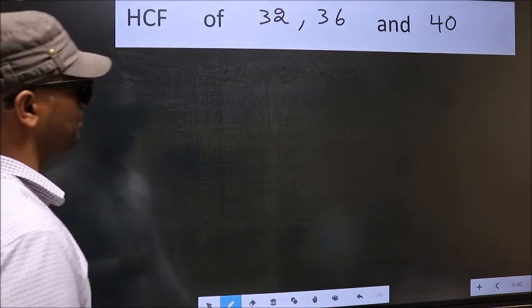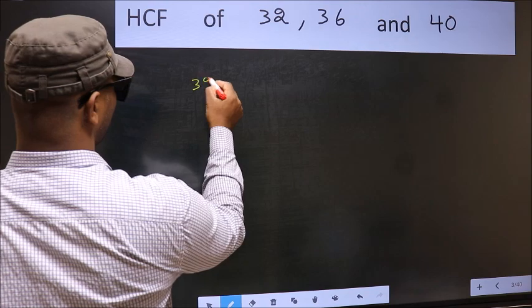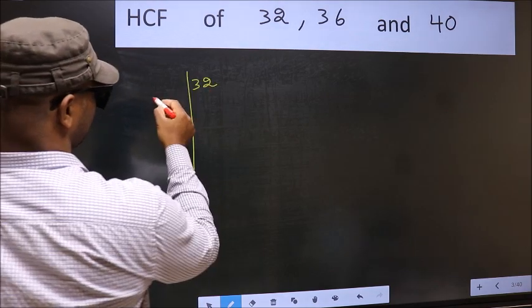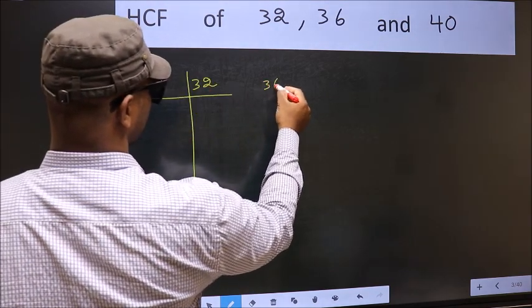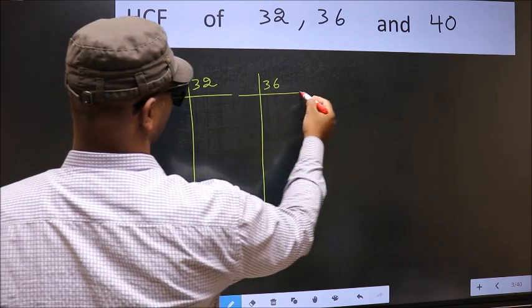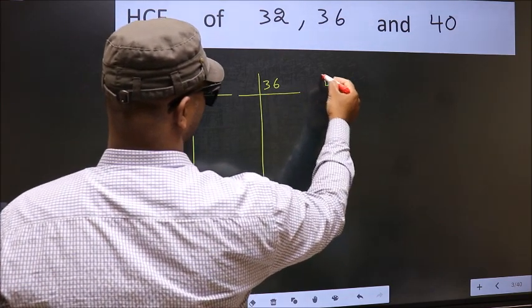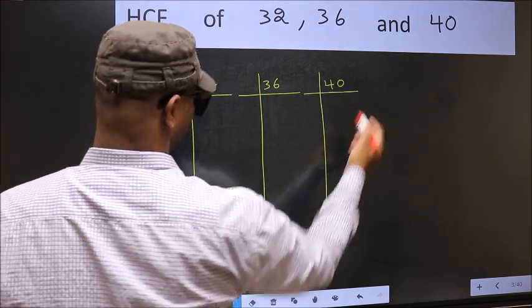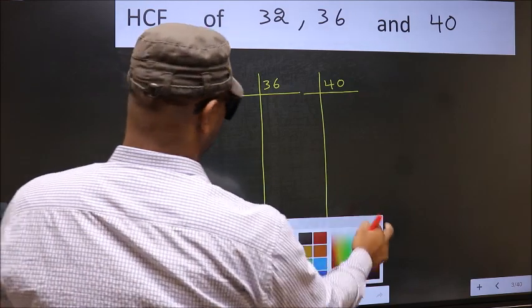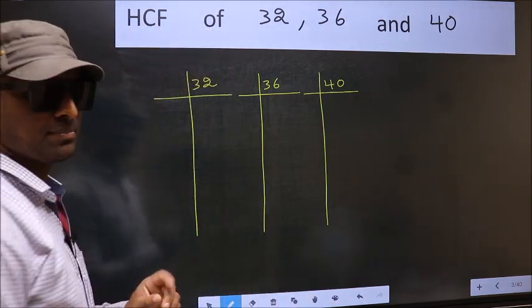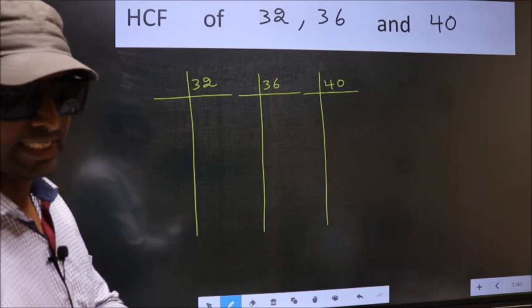What I mean is 32, 36, 40. This is your step 1. Next.